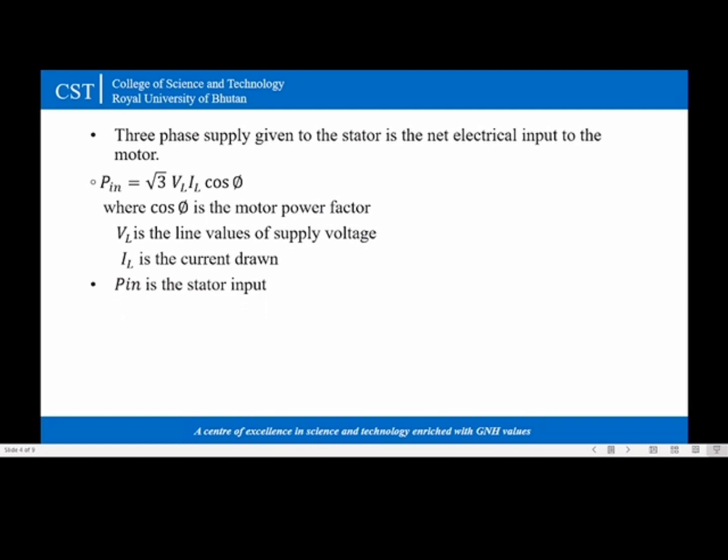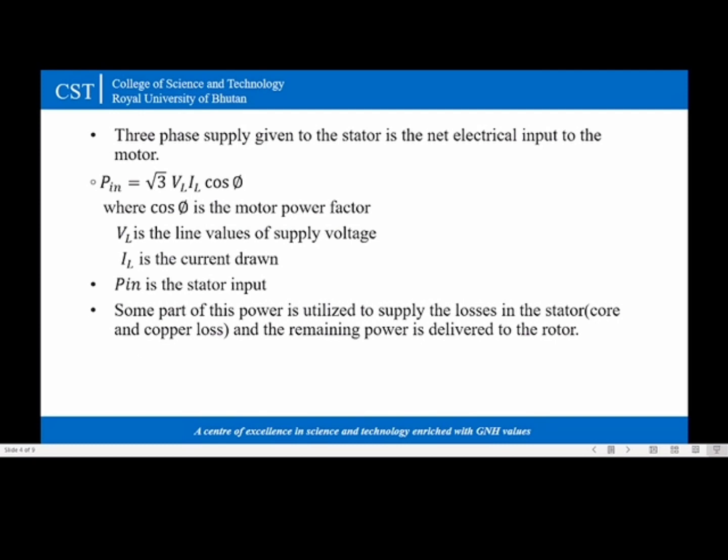Here Pin is nothing but the stator input. Some part of this power is utilized to supply the losses in the stator which are stator core as well as copper losses. The remaining power is delivered to the rotor magnetically through the air gap with the help of rotating magnetic field. This is called rotor input denoted as P2.